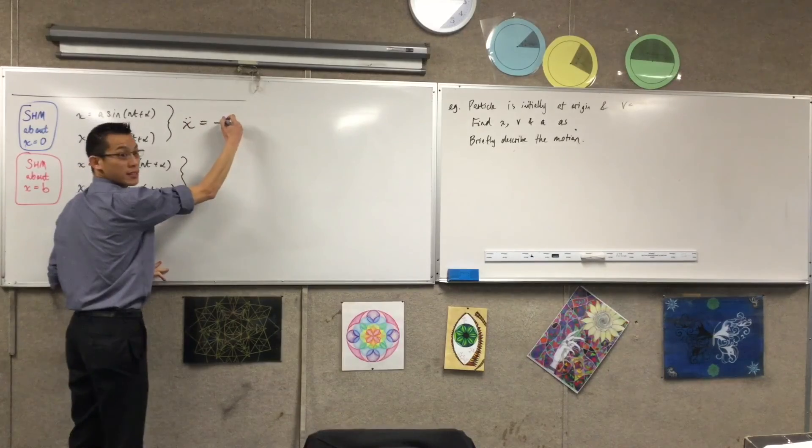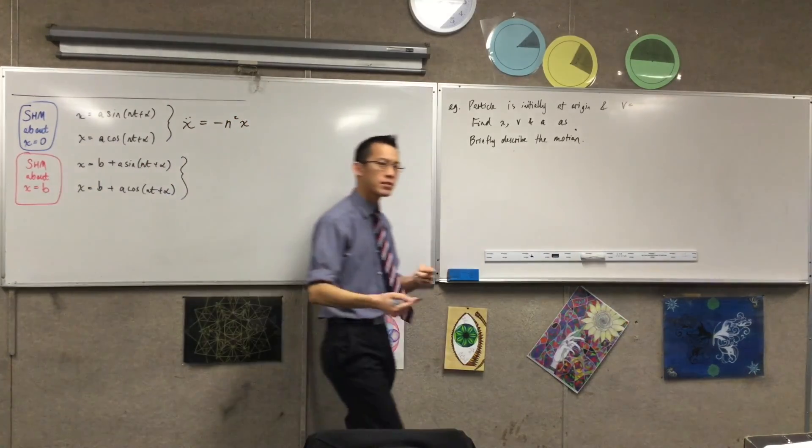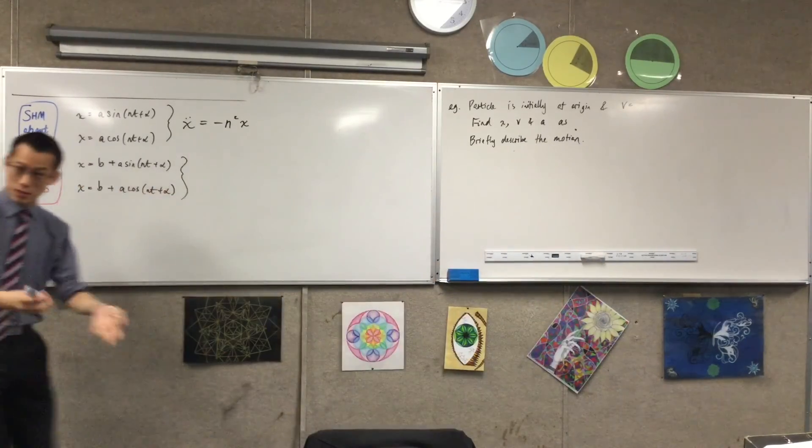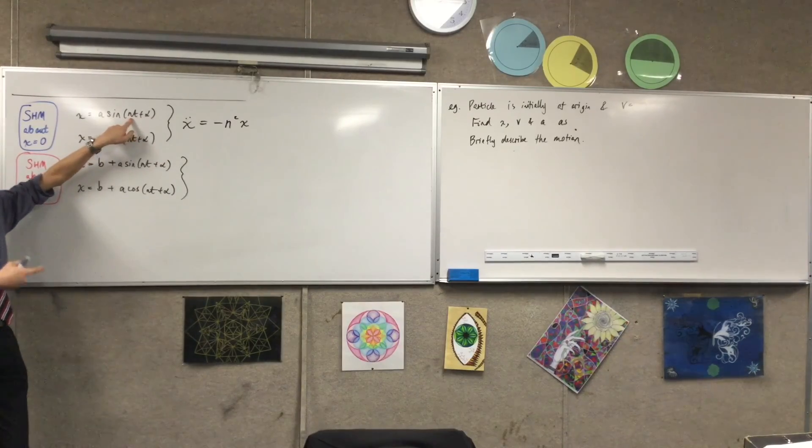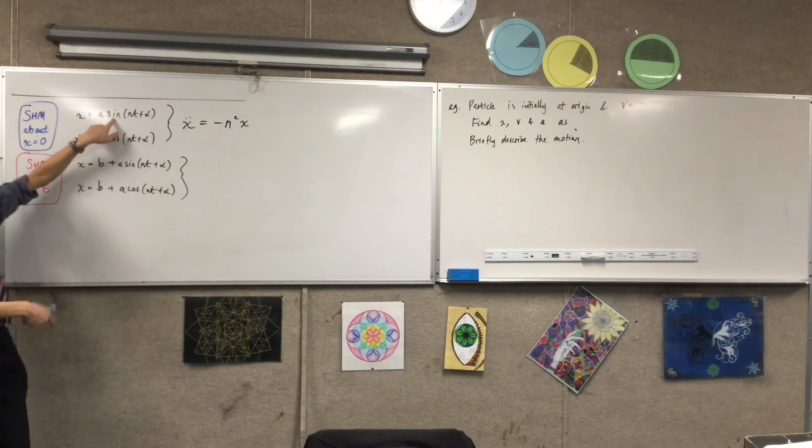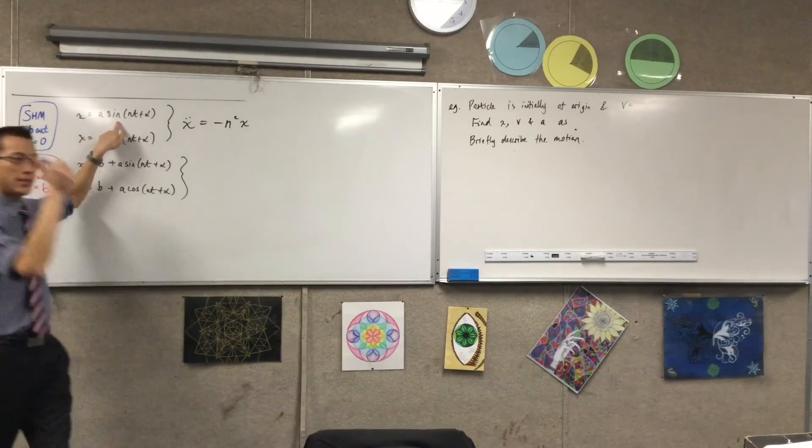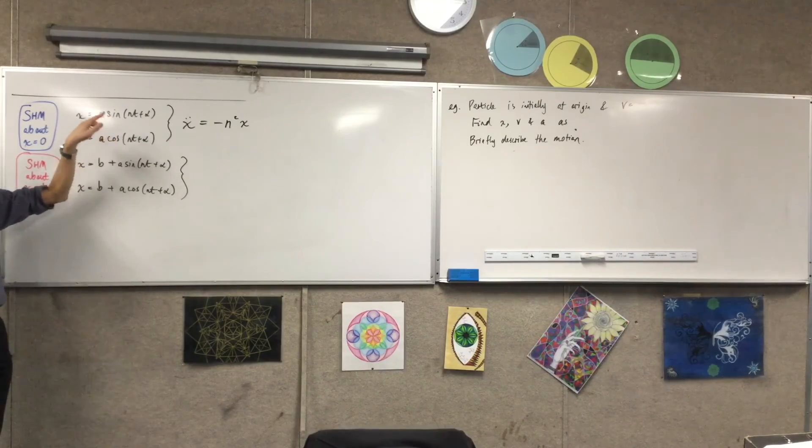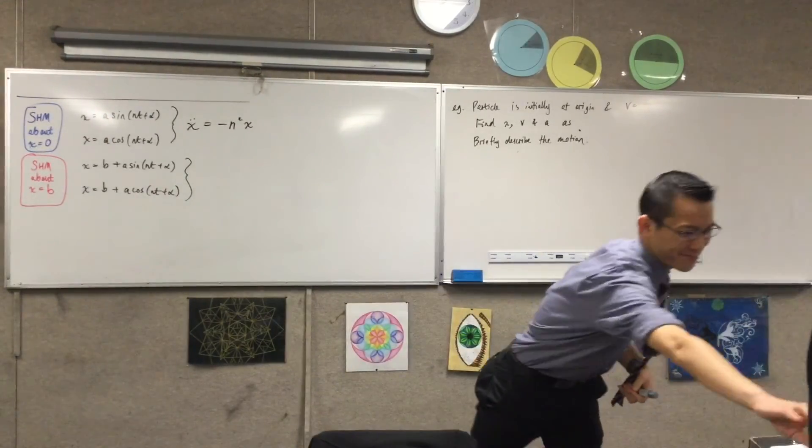It's minus n squared x. So if you differentiate twice, what happens is, each time you differentiate, because of the chain rule, you get an extra factor of n. You remember that, right? Sine will turn into cosine, the first differentiation to get to velocity, the second differentiation to get to acceleration, the cosine will turn into negative sine, right?